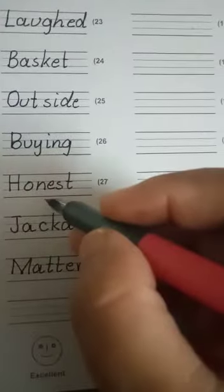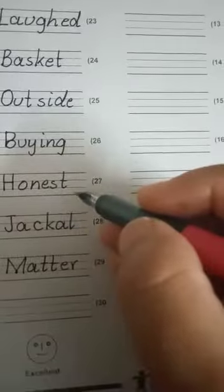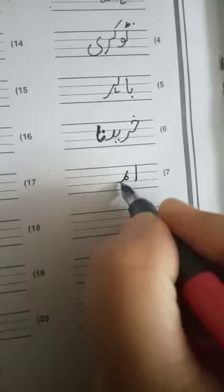Next word is honest. H-O-N-E-S-T, honest. Honest means imaandar. Alif, ye, e, mim, alif, ma, noon, imaan, dal, alif, da, re, imaandar.